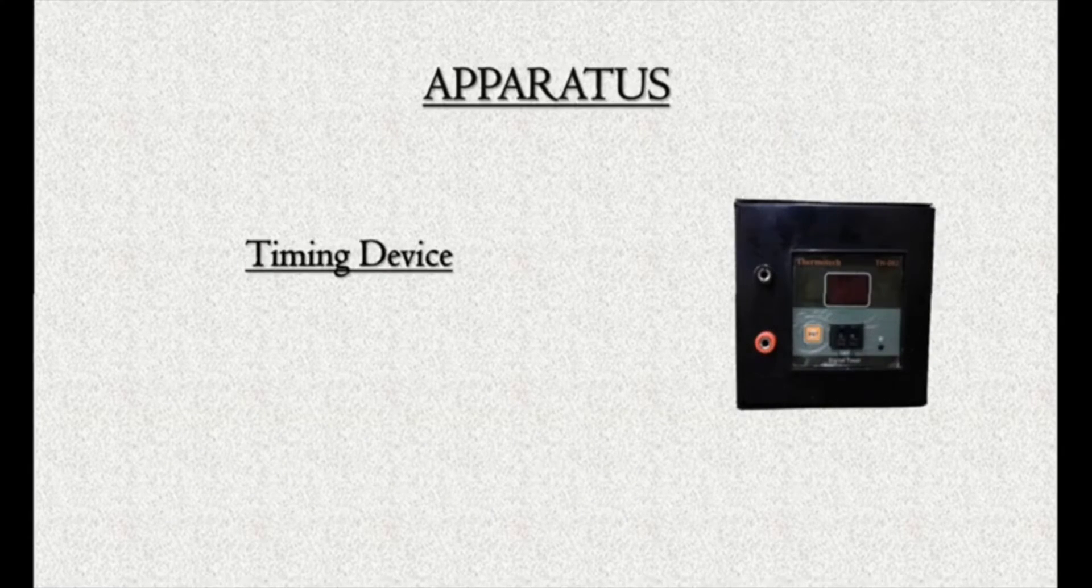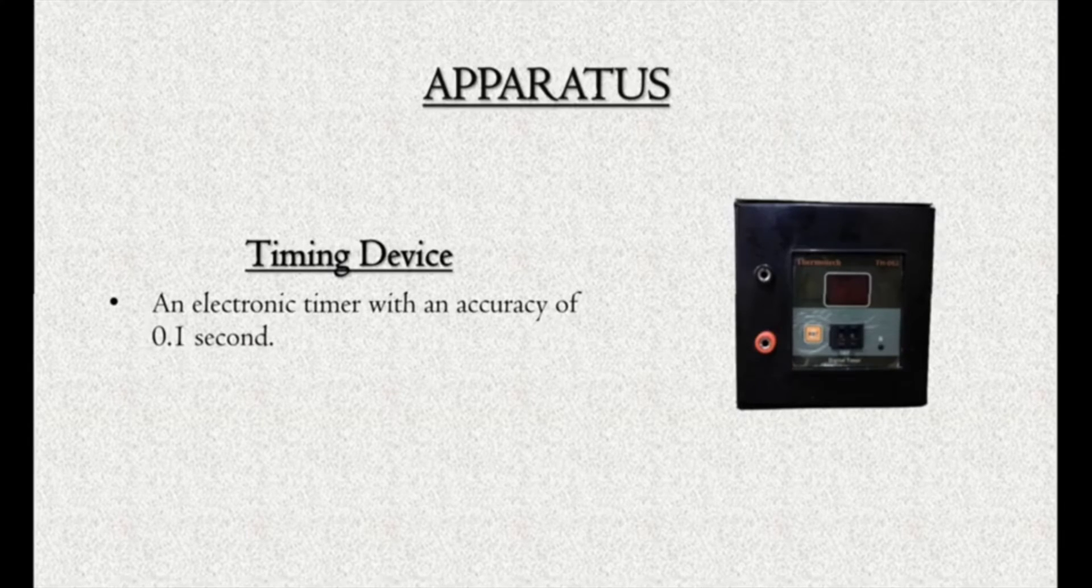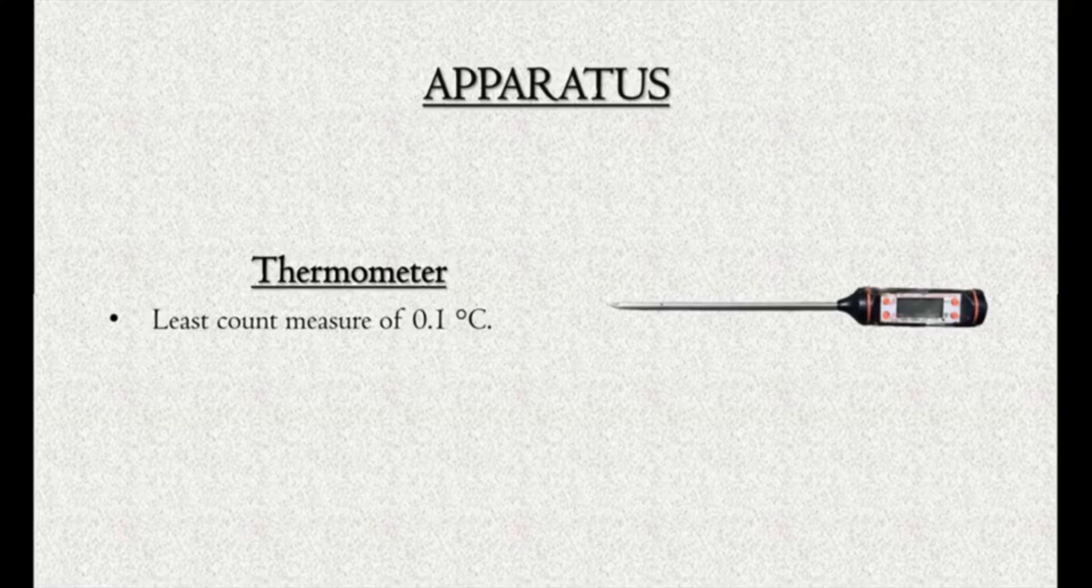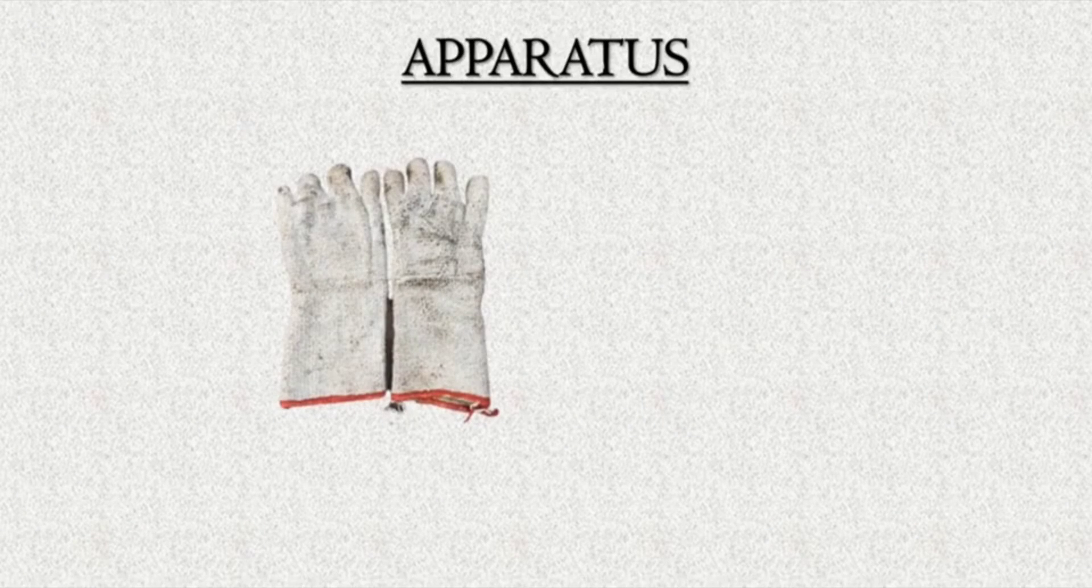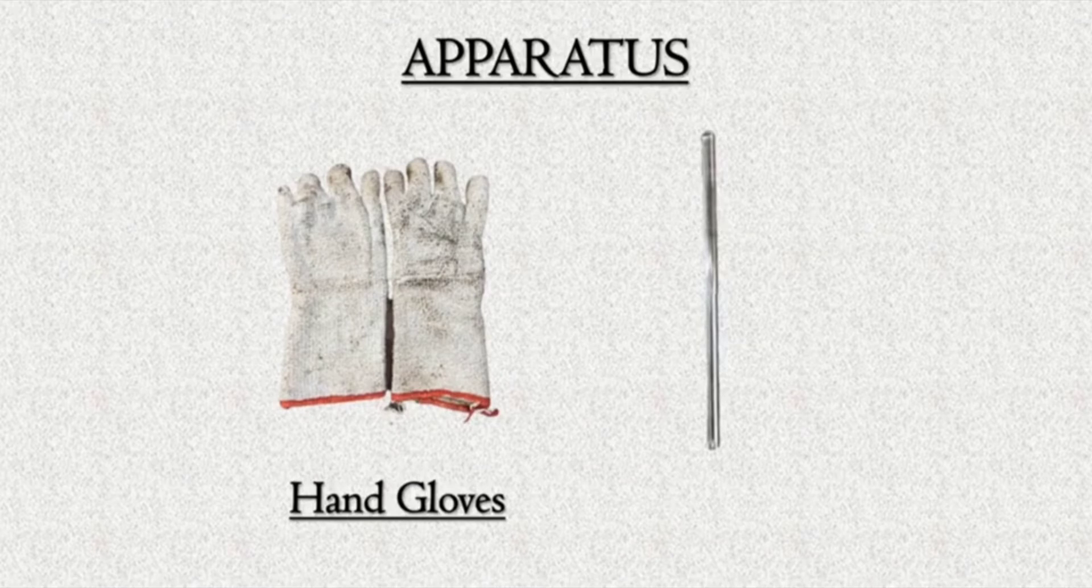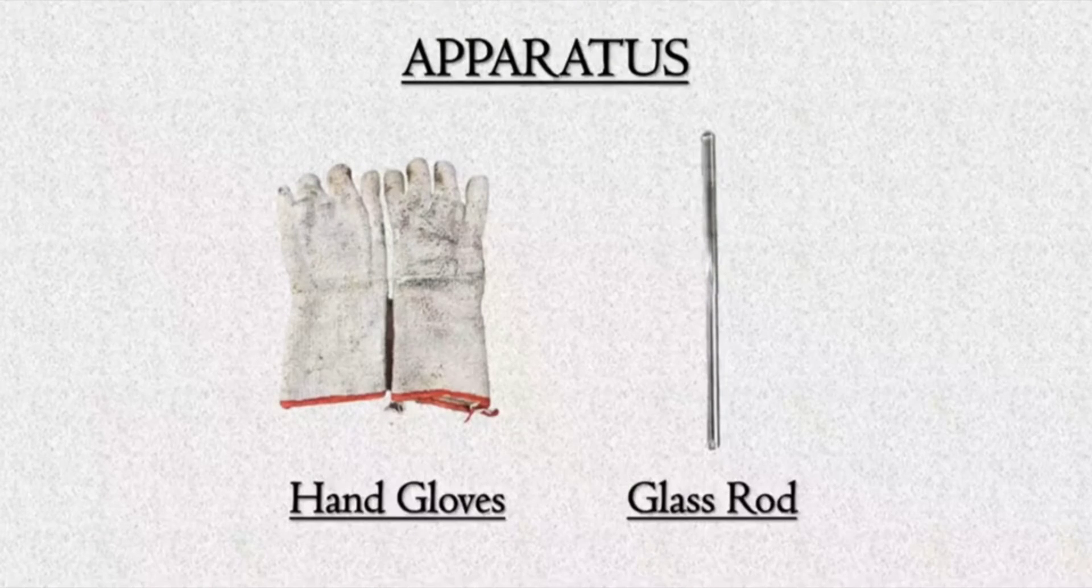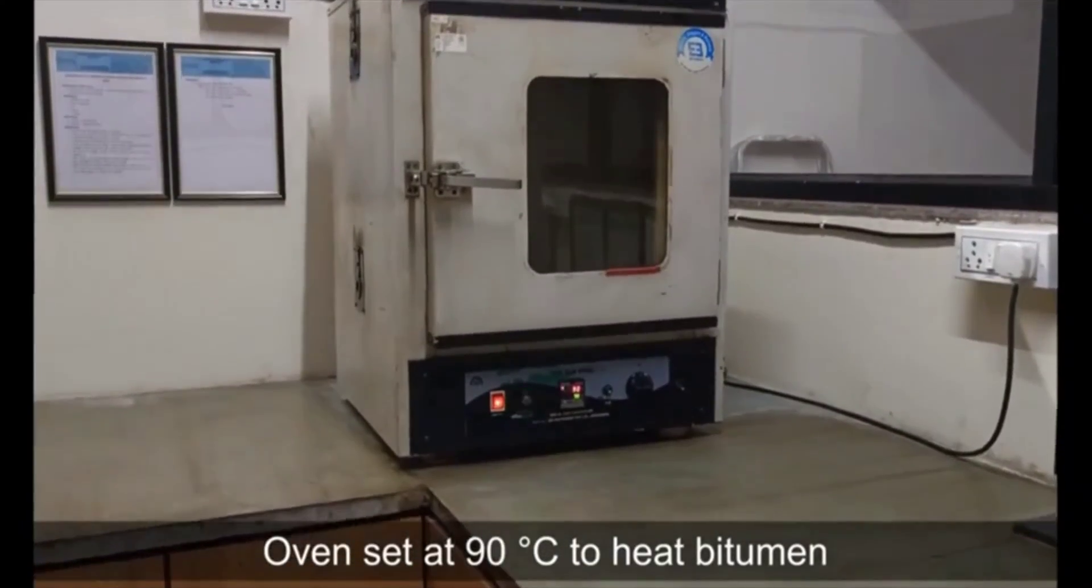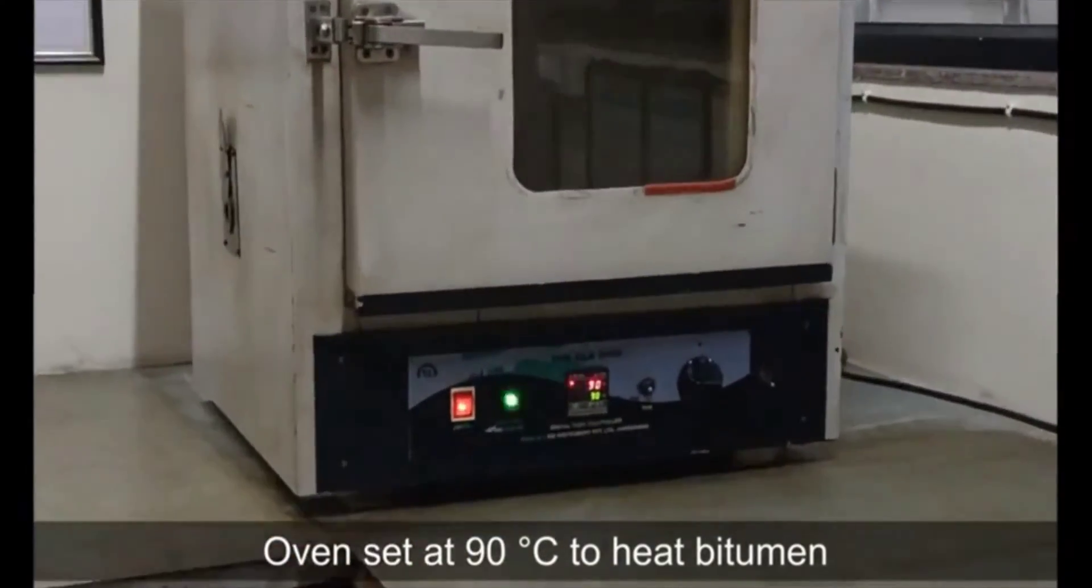Timing device: An electronic timer with an accuracy of 0.01 second. Thermometer: Least count measure of 0.1 degrees Celsius. Hand gloves. Glass rod. Oven set at 90 degrees Celsius to heat bitumen.